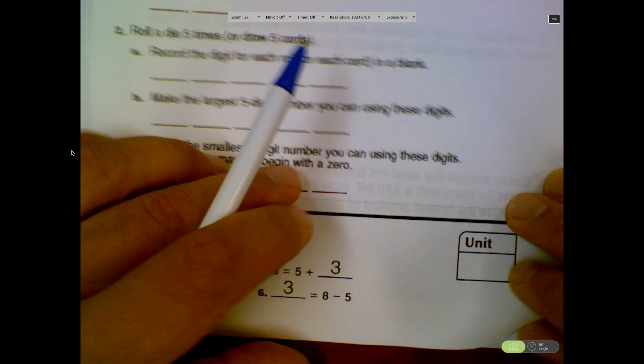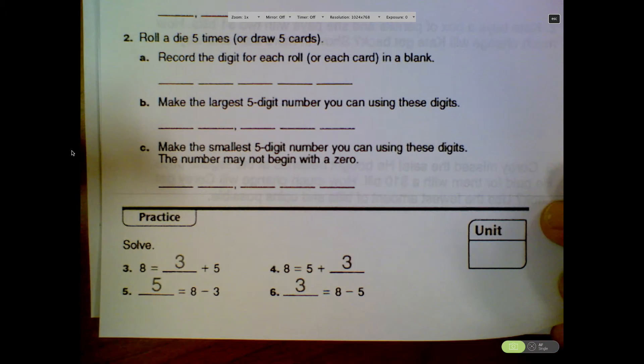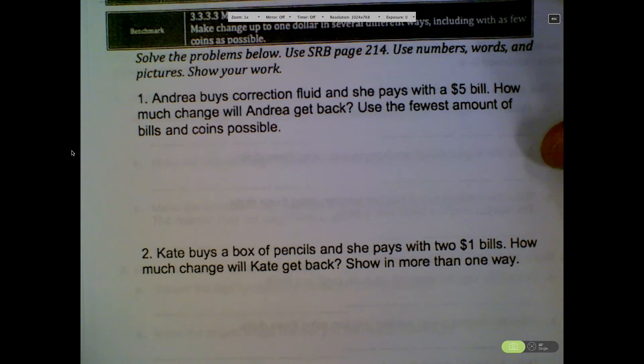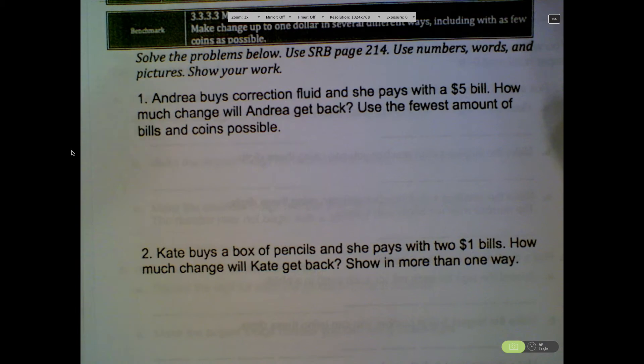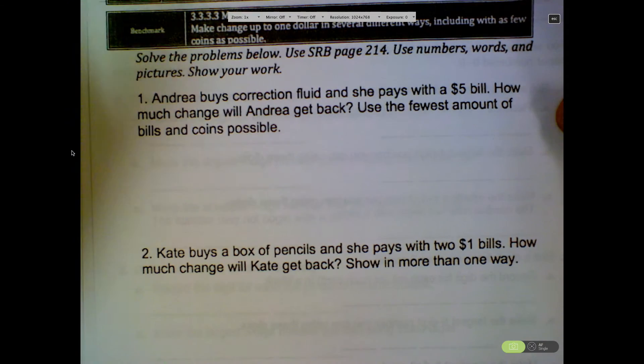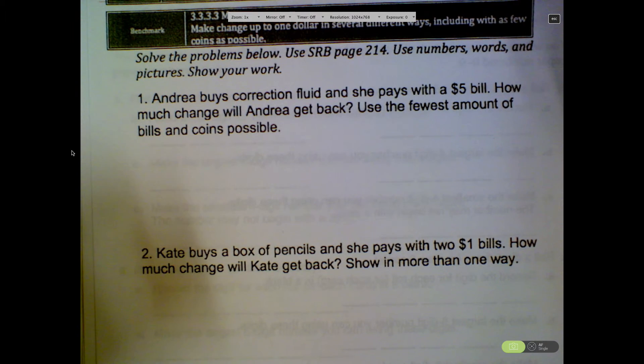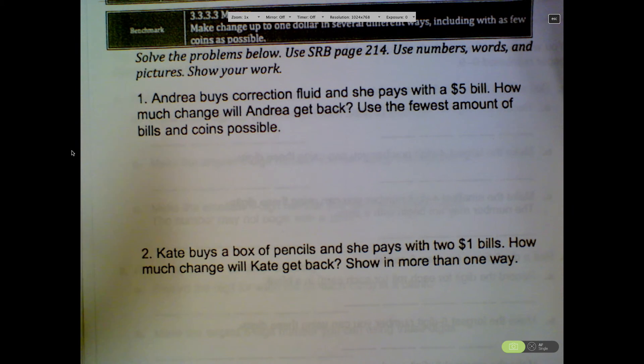You don't have to do this page twice. Oh, the answers are in the swipe. Don't look at the answers. Wow, you can check your work. Then we've got some story problems on this page. And the first one says, Andrea buys Correction Fluid and she pays with a $5 bill. How much change will Andrea get back? Use the fewest amount of bills and coins possible. We are going to pause this.